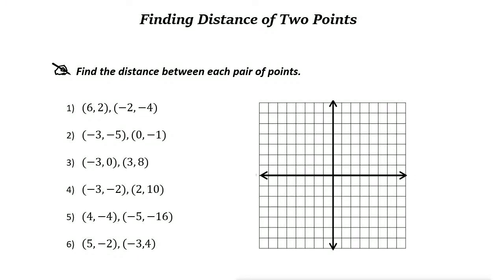Finding the distance of two points. If you have two points on the coordinate plane, let's say I have a point here and a point here, and I want to find the distance between these two. The distance is the shortest line that you can draw between these two points. To find the distance of these two points, we can use this formula.